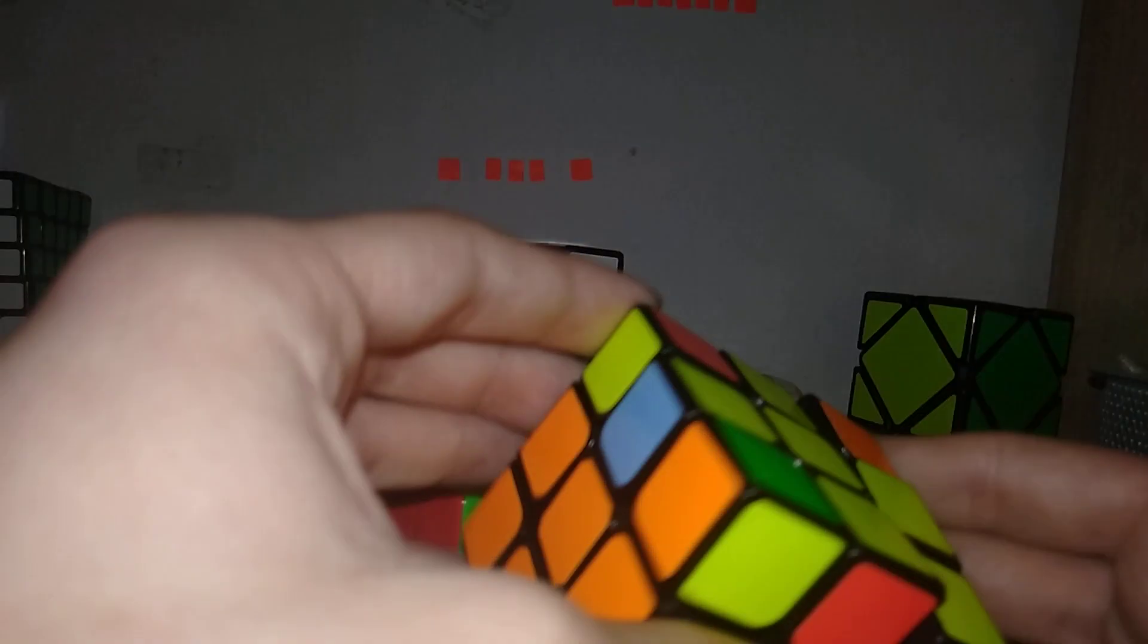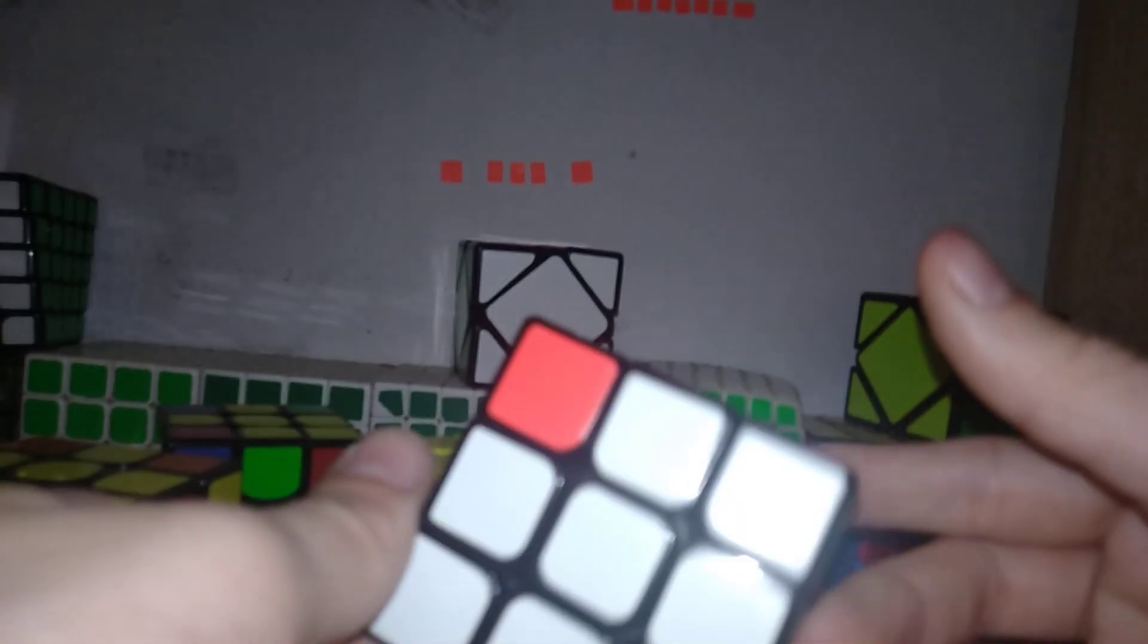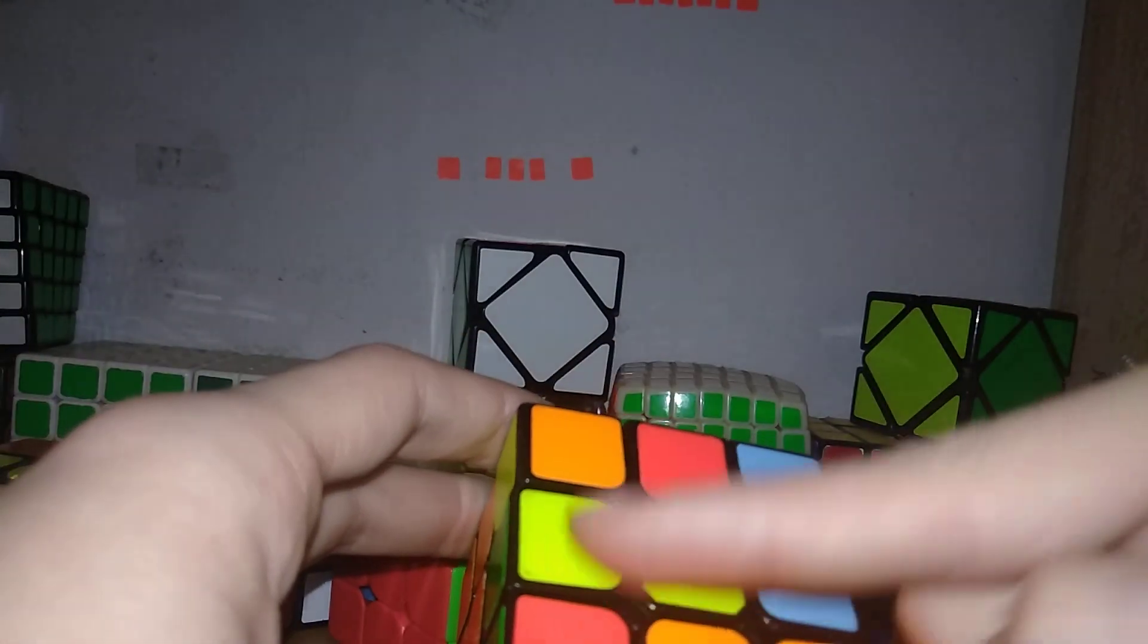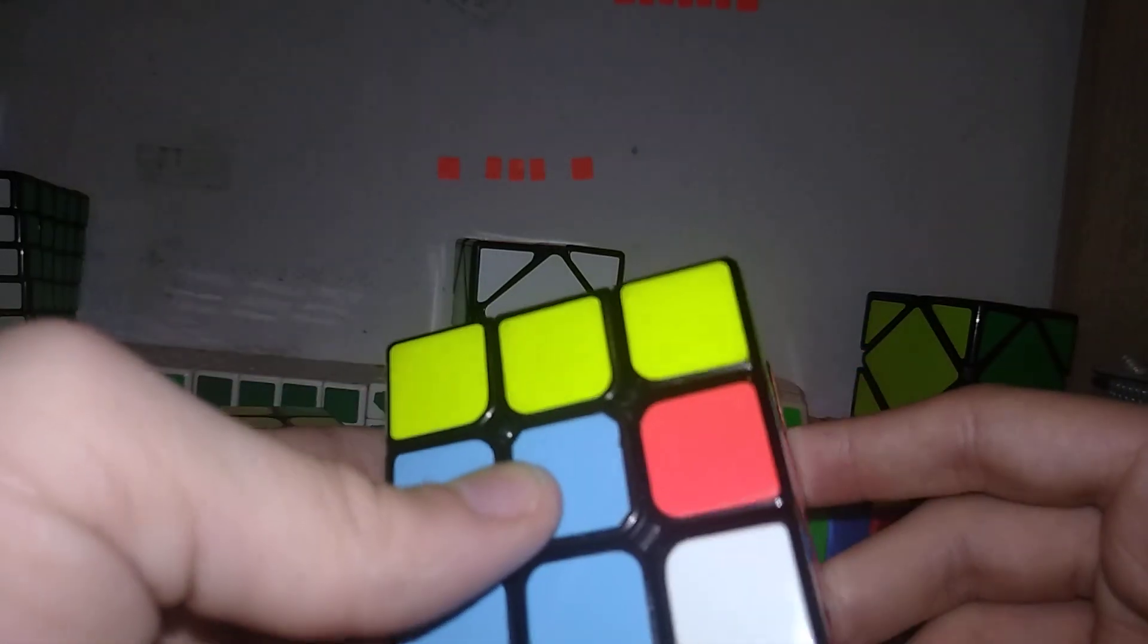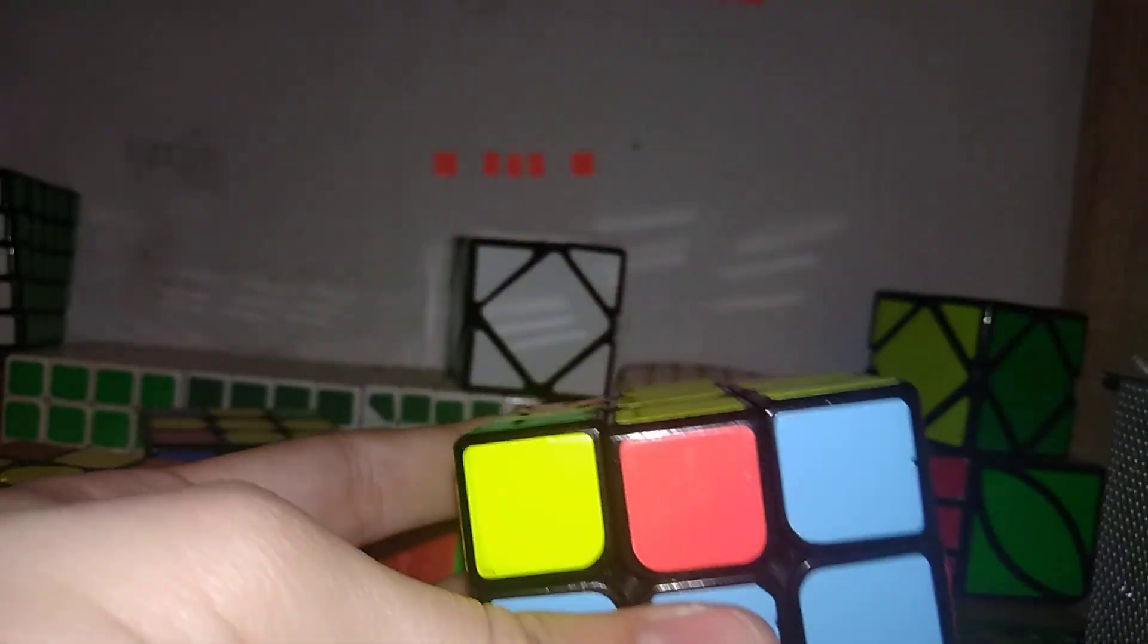And then there's the other case where one edge is oriented and the other three are not. In this case, it's pretty standard, widely known. You put the oriented edge on the left and then you do wide R U' wide R' U2, the inverse of the first three moves and they have a pair. So again wide R U' wide R' U2 wide R U wide R' R U R'.